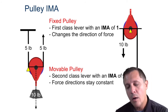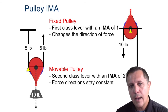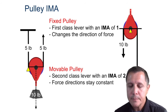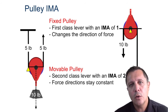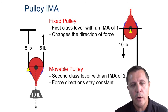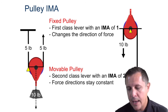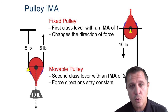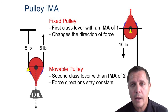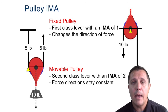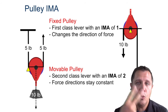For IMA of pulleys, you just look at the number of strands that are supporting the weight and count them. In this case there are two strands supporting that weight, which means the IMA is two.